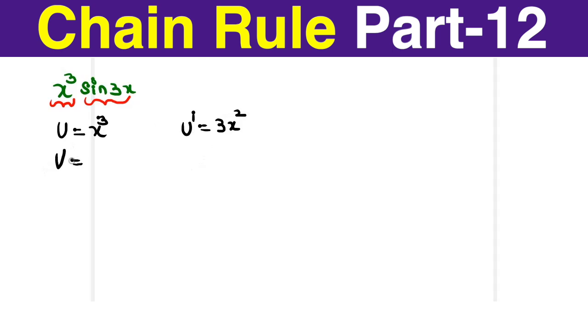Now, let us take the v. The v is equal to sin 3x. Here is where the chain rule of v dash is going to come in.